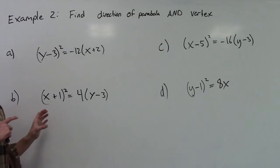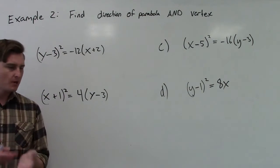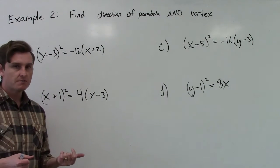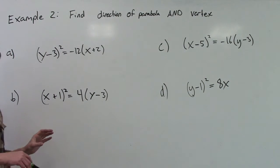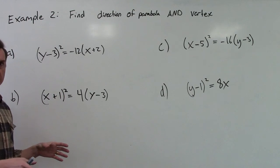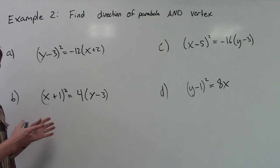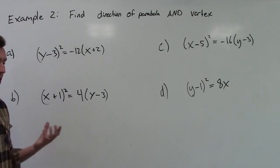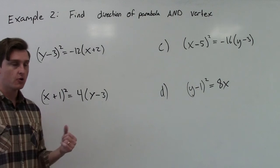So the new thing here is finding the direction. The first example that we did, we just assumed it was a parabola opening up. We didn't really talk too much about direction. But now that we talked about the different categories of equations or parabolas in focal form, we know that they can open up one of four directions: up, down, left, or right.